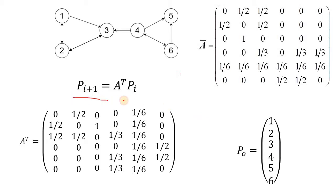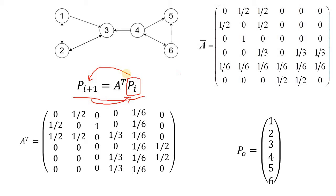This is the formula provided in the initial PageRank algorithm: using the page rank values of all the pages in the previous iteration and multiplying with A transpose gives us the page rank values for the current iteration. Putting them back into this equation gives us the values for the next iteration. The process continues and in each iteration the values get refined.